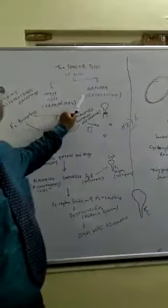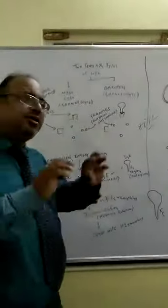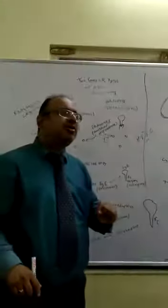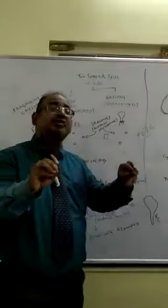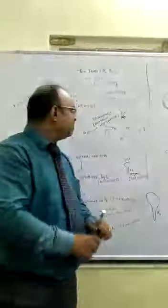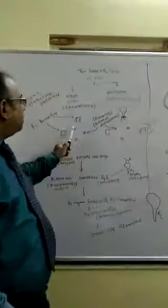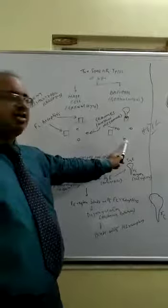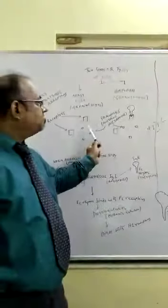Mast cells and basophils are granulocytes. What are granulocytes? They contain histamine. You need to understand that mast cells and basophils, as granulocytes, contain and release histamine.